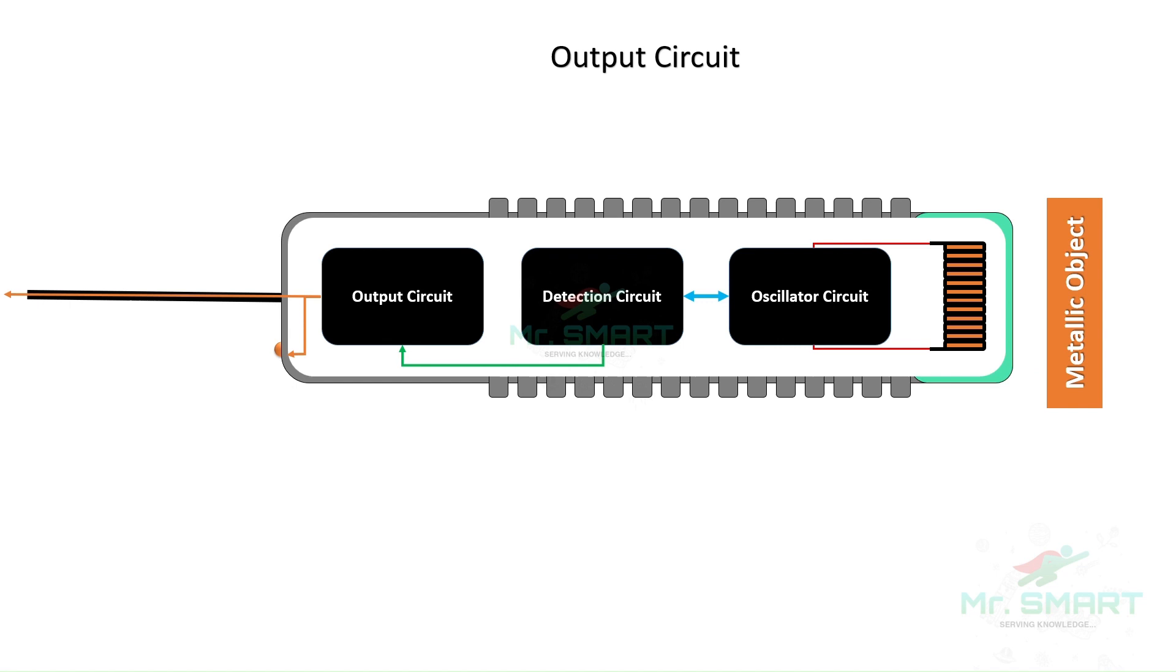The detection circuit then triggers the output circuit. The output circuit signals and performs various actions, such as turning on an indicator light or sending a signal to a control system.